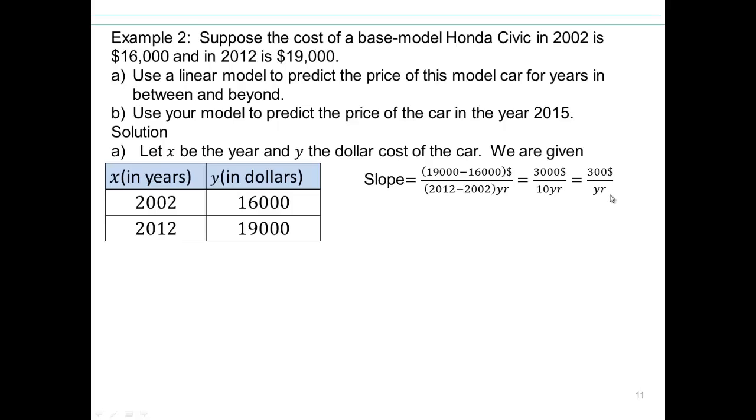So the Honda Civic base model is basically increasing by $300 per year. All right, so the equation of the line would be then Y equals $19,000 plus slope, which is 300, times X minus 2012. So since we're using 2012 as the point in the point slope form, another way to think of it would be that the number of years after 2012, the price of this model is going to be $19,000 plus increments of $300 per year over 2012. That's how you can read this or interpret this equation here.